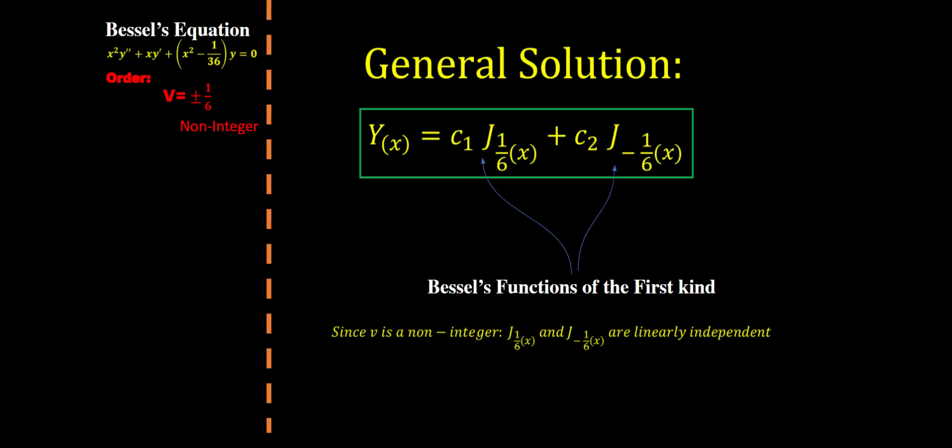Since our order 1/6 is a non-integer, the two Bessel functions are linearly independent. A lot of math classes would just leave the solution at this, but in this video let's continue and see where it can lead us.